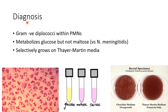Now let us discuss the diagnosis of Neisseria gonorrhea. Microscopy shows gram-negative diplococci within neutrophils, as you can see in this picture. Neisseria gonorrhea metabolizes only glucose and not maltose, as shown in this picture.